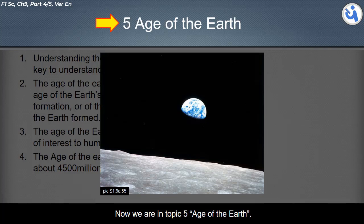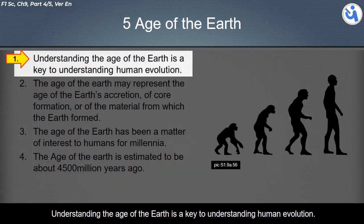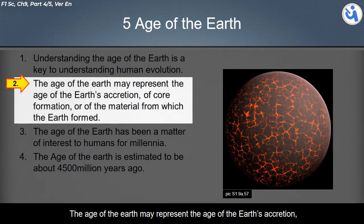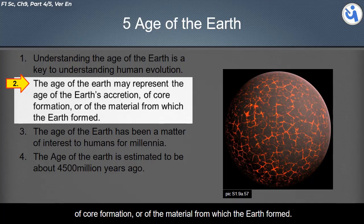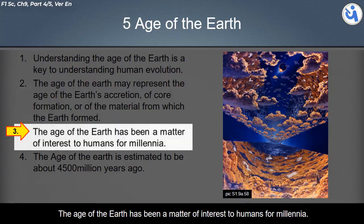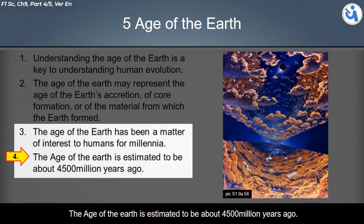We are now in topic five: Age of the Earth. Understanding the age of the earth is key to understanding human evolution. The age of the earth may represent the age of its accretion, core formation, or of the material from which the earth formed. The age of the earth has been a matter of interest to humans for millennia, and is estimated to be about 4,500 million years ago.